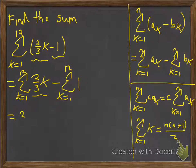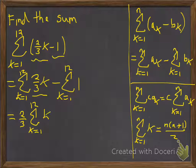So let's go ahead and factor out the 2/3, sum k equals 1 to 12, and then we have just k minus, and then if we're just adding up 1 twelve times, it's just 12.